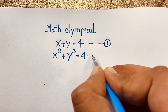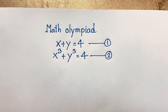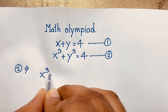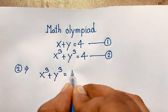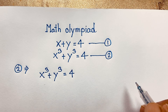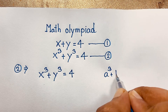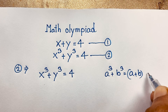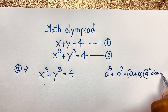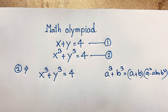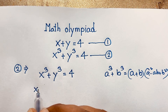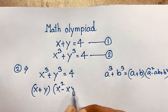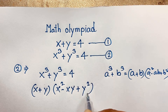This is our first equation and this is our second equation. First of all, I take our second equation which is x cubed plus y cubed is equal to 4. According to this identity, a cubed plus b cubed equals a plus b times a squared minus ab plus b squared. If I apply this formula here, it will be x plus y times x squared minus xy plus y squared is equal to 4.